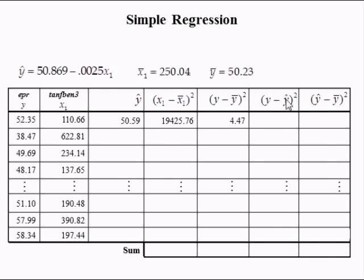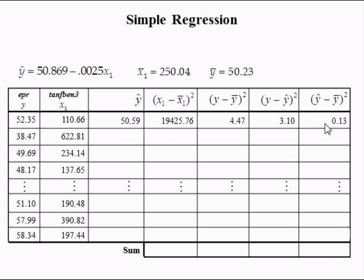The squared deviation between the first observed value of Y and the first predicted value of Y is found by subtracting 52.35 and 50.59. When we square that difference, we get 3.10. The first squared deviation between the predicted value and the sample mean of Y is found by taking 50.59 minus 50.23; squaring the difference gives 0.13.